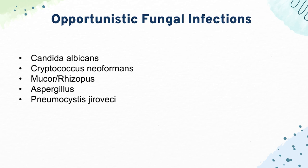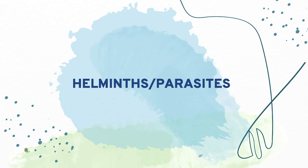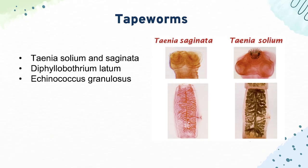Up next, we have our helminths and parasites. Our tapeworms are first: Taenia solium and Taenia saginata. Solium comes from undercooked pork and saginata from undercooked beef — know how both look on microscopy. Solium has hooks/teeth around its scolex; saginata does not. Then we have Diphyllobothrium latum, a tapeworm from undercooked fish.